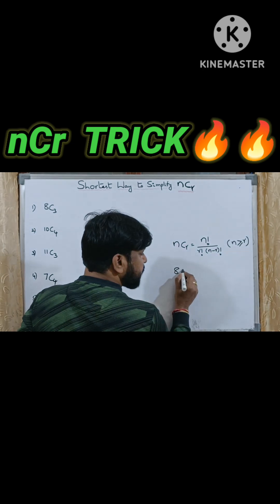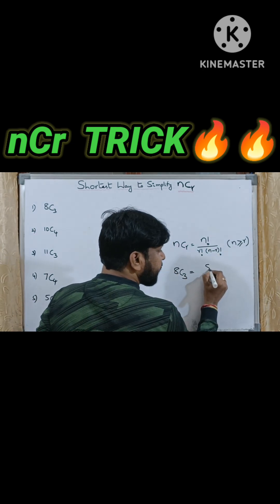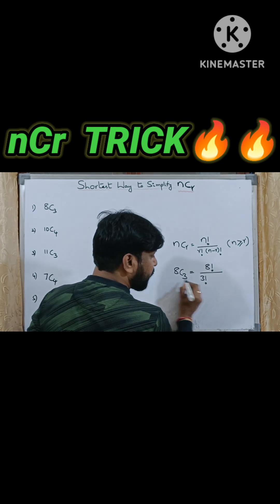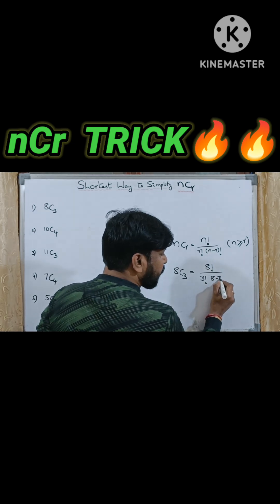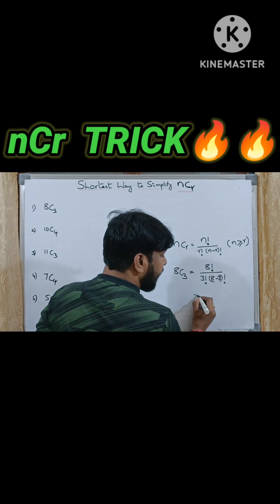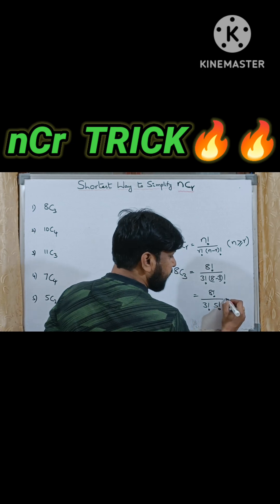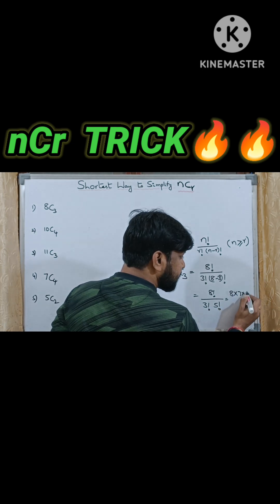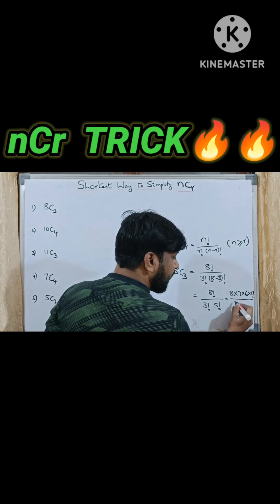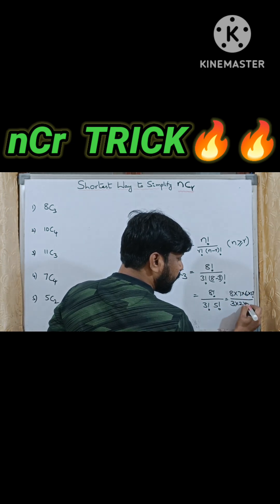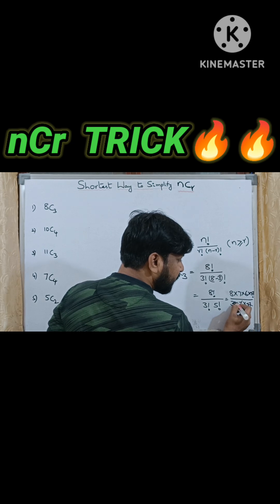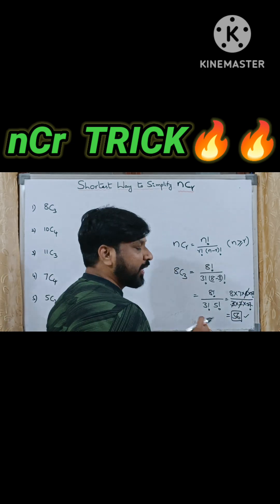For example, if you want to solve 8C3, we represent it as 8 factorial by 3 factorial into 8 minus 3 factorial. So, 8 factorial by 3 factorial into 5 factorial. This can be written as 8 into 7 into 6 into 5 factorial, by 3 factorial written as 3 into 2 into 1, into 5 factorial. The 5 factorials cancel, 3 into 2 is 6 which cancels with 6, and 7 into 8 gives the answer 56.